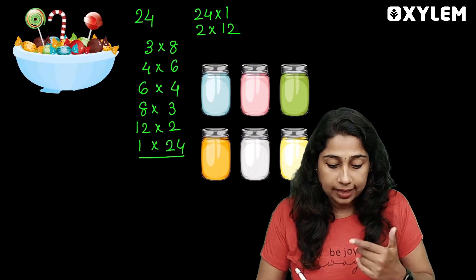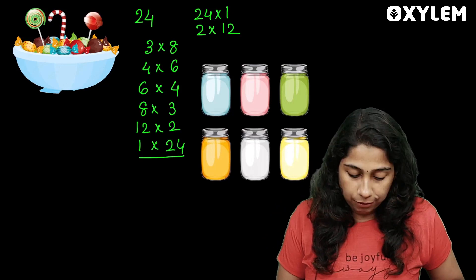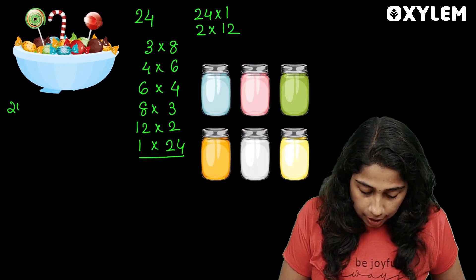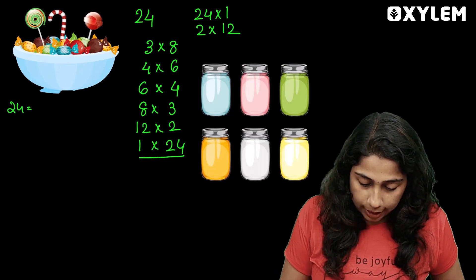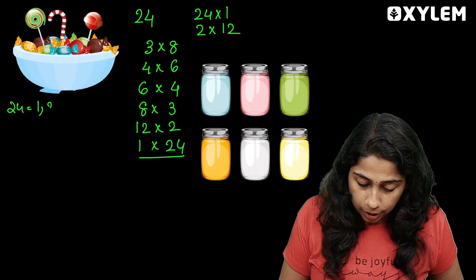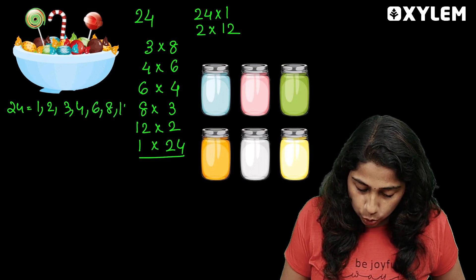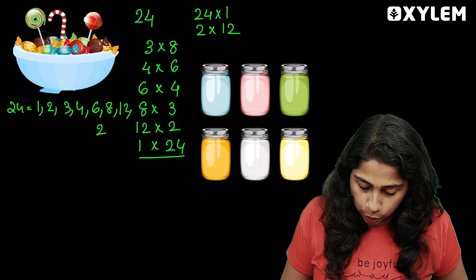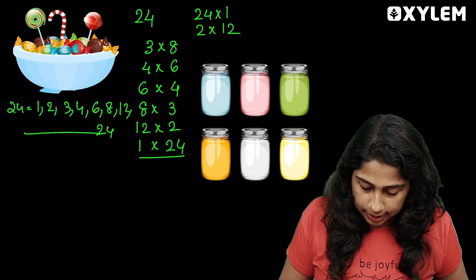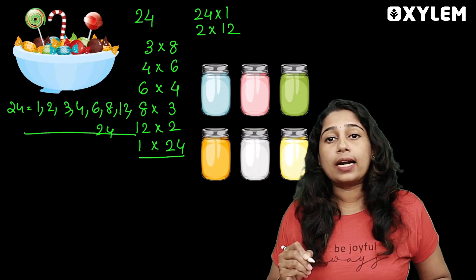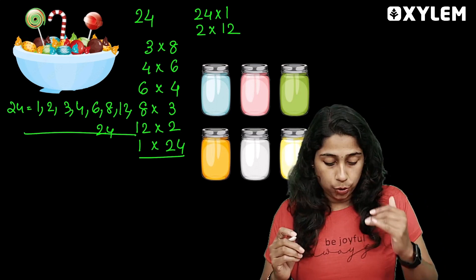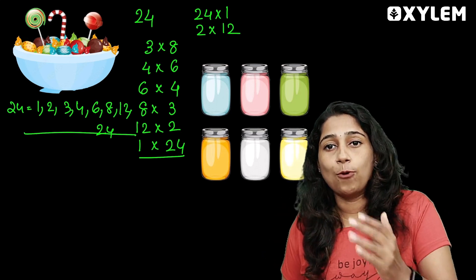What are the factors of the number 24? 24 is equal to 1, 2, 3, 4, 6, 8, 12, and 24. These are the factors of 24.